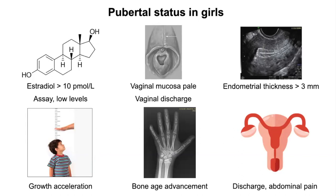Puberty in girls is marked by a change in uterine shape from tubular to globular, followed by an increase in endometrial thickness up to 3 mm. Endometrial thickness more than 5 mm indicates impending menarche. Growth acceleration and bone age advancement are also seen, along with abdominal pain due to associated ovulatory function.